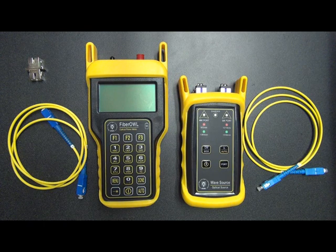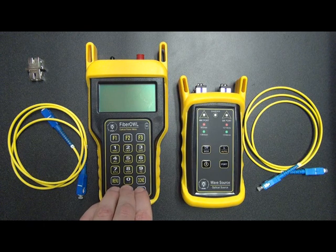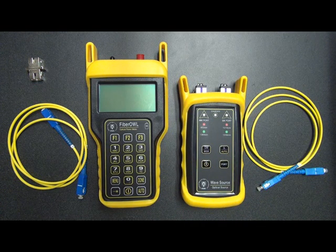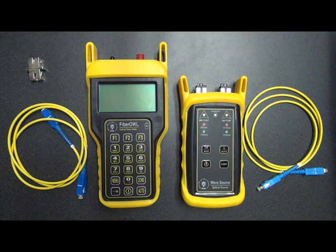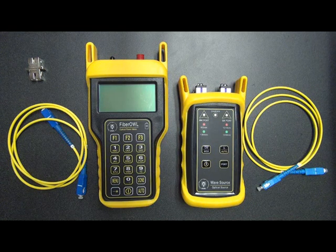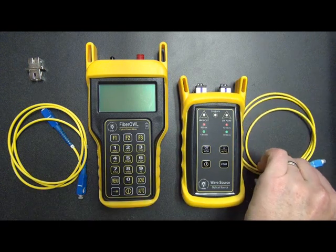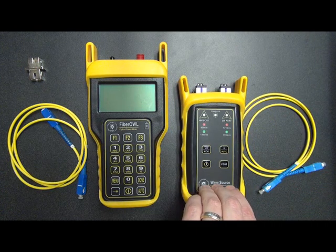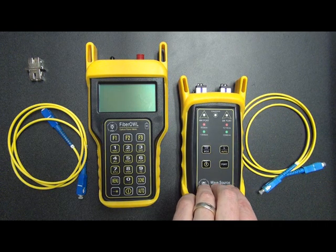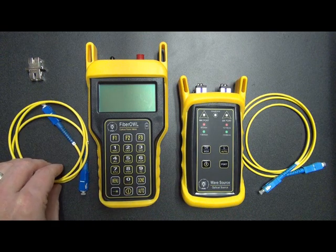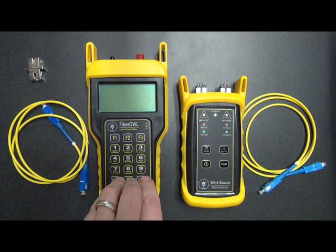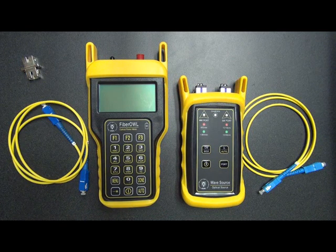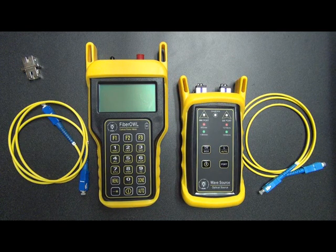In this procedure, we will be using a Fiber Owl 4 optical power meter and a single mode port and wave source light source. You'll notice that there are two patch cables and one mating sleeve used in this procedure. This reference cable will be used to connect the wave source into the link under test and also zero out the equipment together. This patch cable will be used to connect the Fiber Owl into the link under test, and the mating sleeve will be used to connect these two cables together for the purpose of checking them.